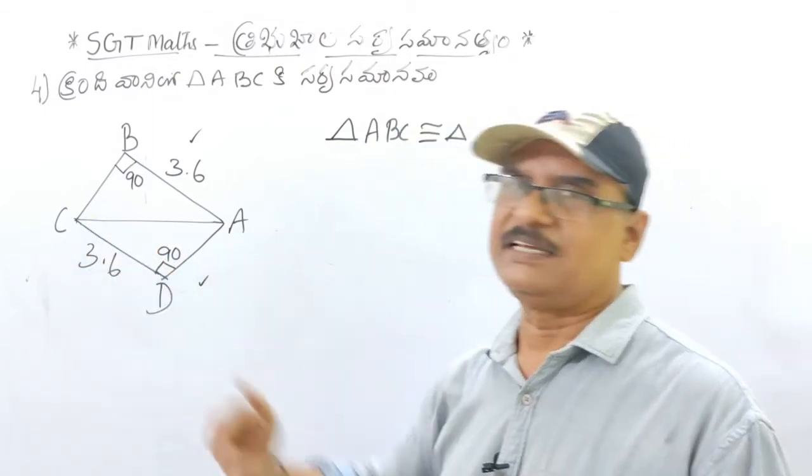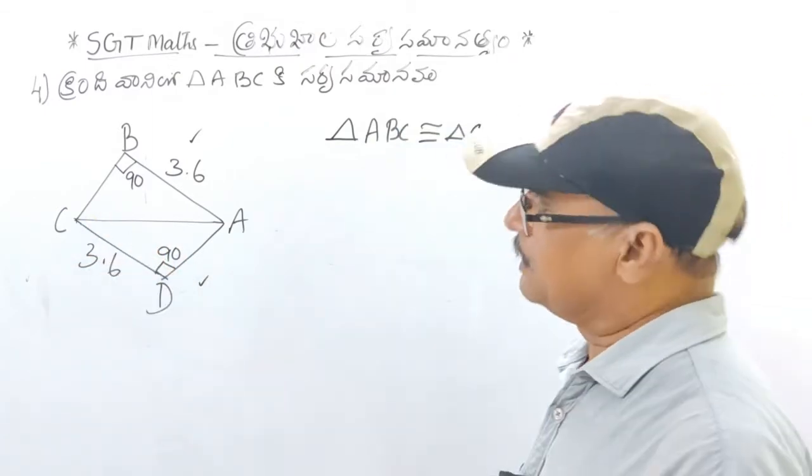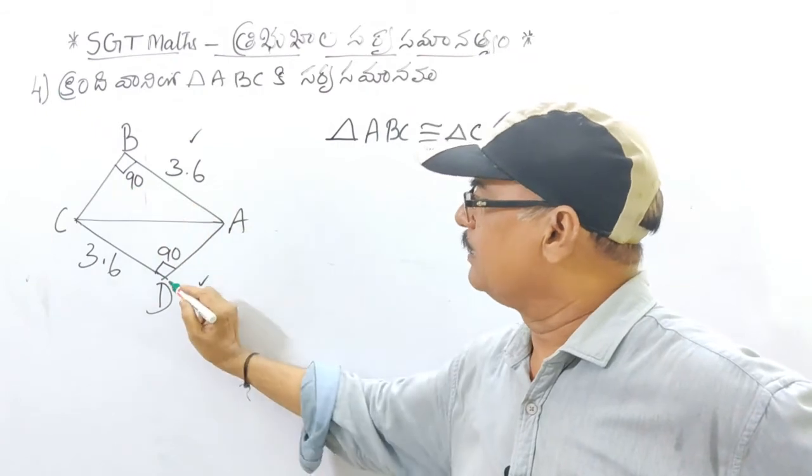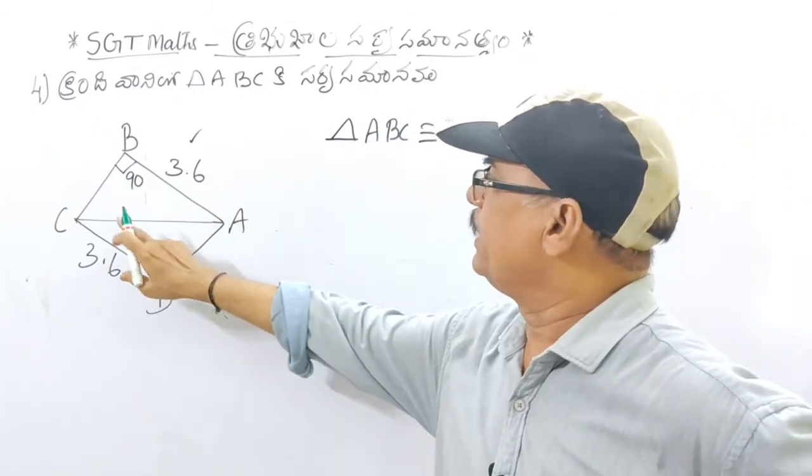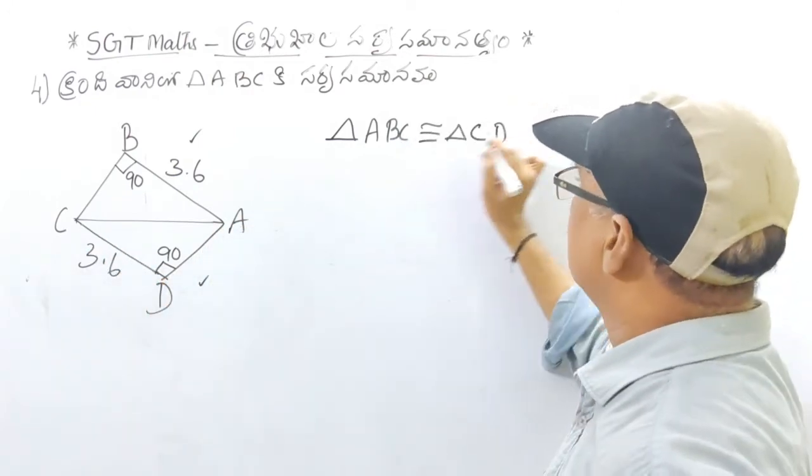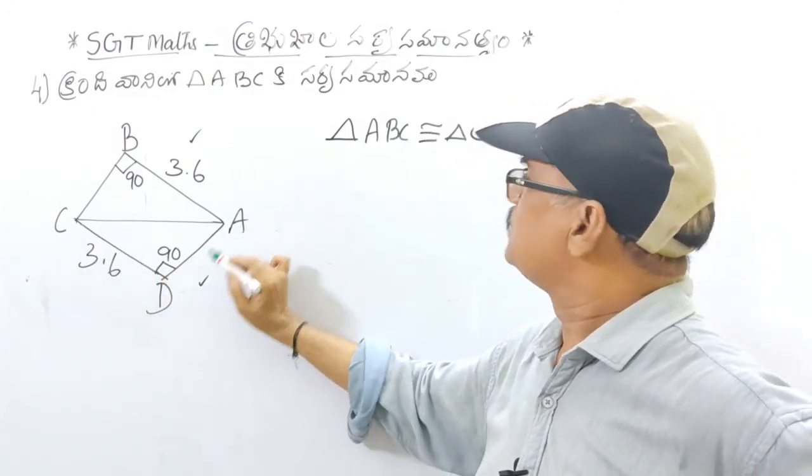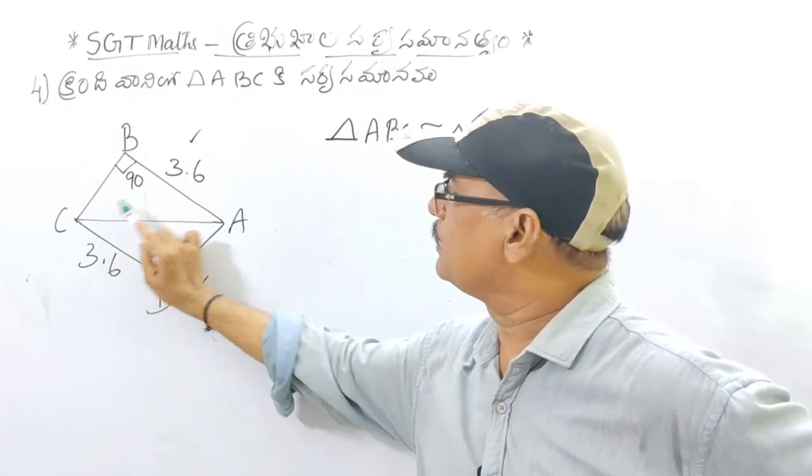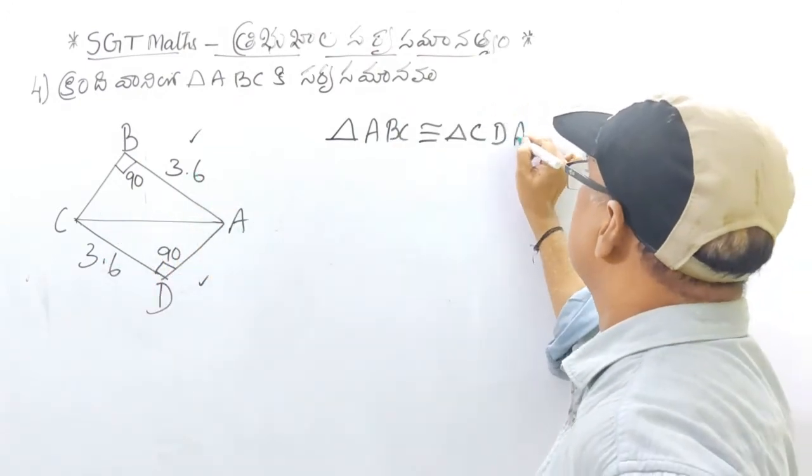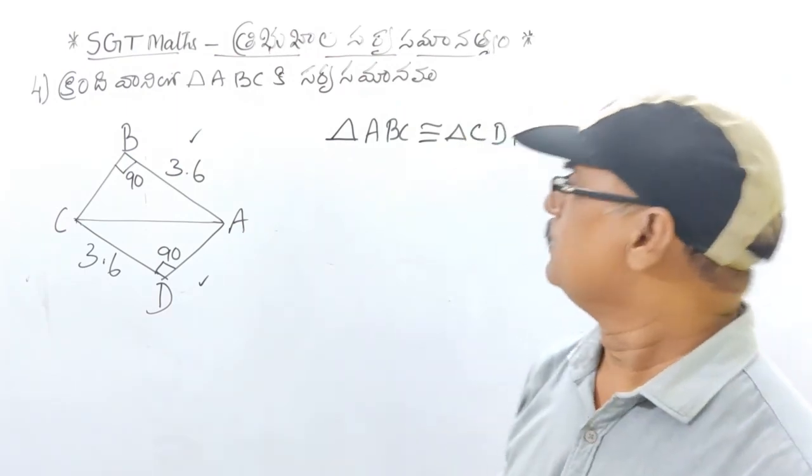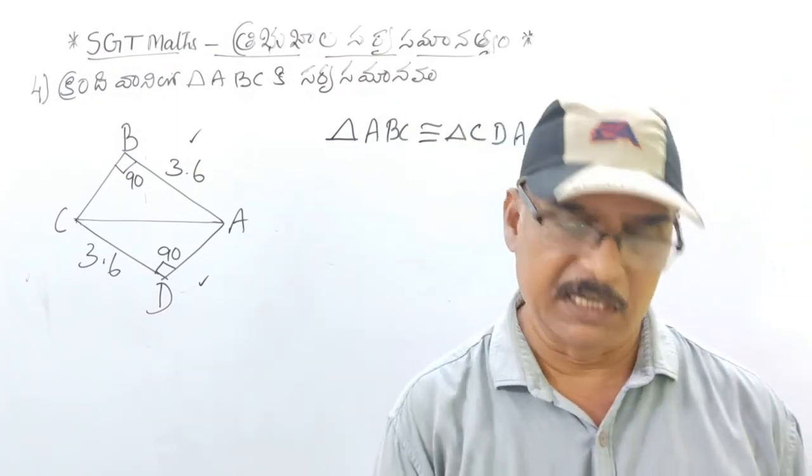This is C, that is C, right. Here B is 9, here D is 9. This is ABC, this is CDA. You can choose A, this is C and A, this is 3.6. We can choose CDA. Just a little bit, easy to understand.